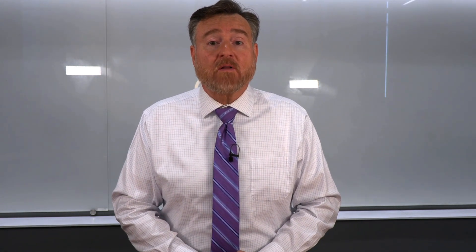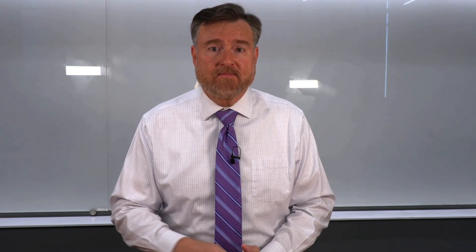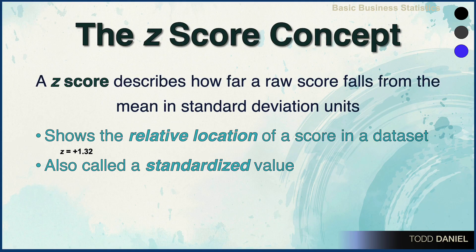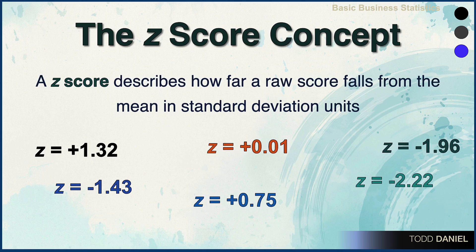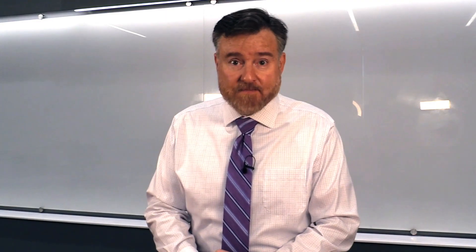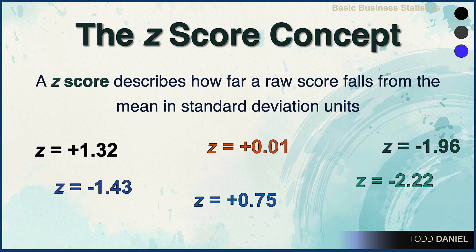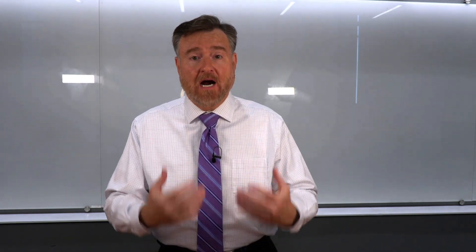Let me illustrate what a z-score will look like so you'll recognize it when you see one. These are z-scores, and you'll notice they all have something in common: they all begin with z. They also have a sign — either positive or negative — and they have numbers presented as a number, a decimal, and two trailing digits. That is how we are going to structure our z-scores.